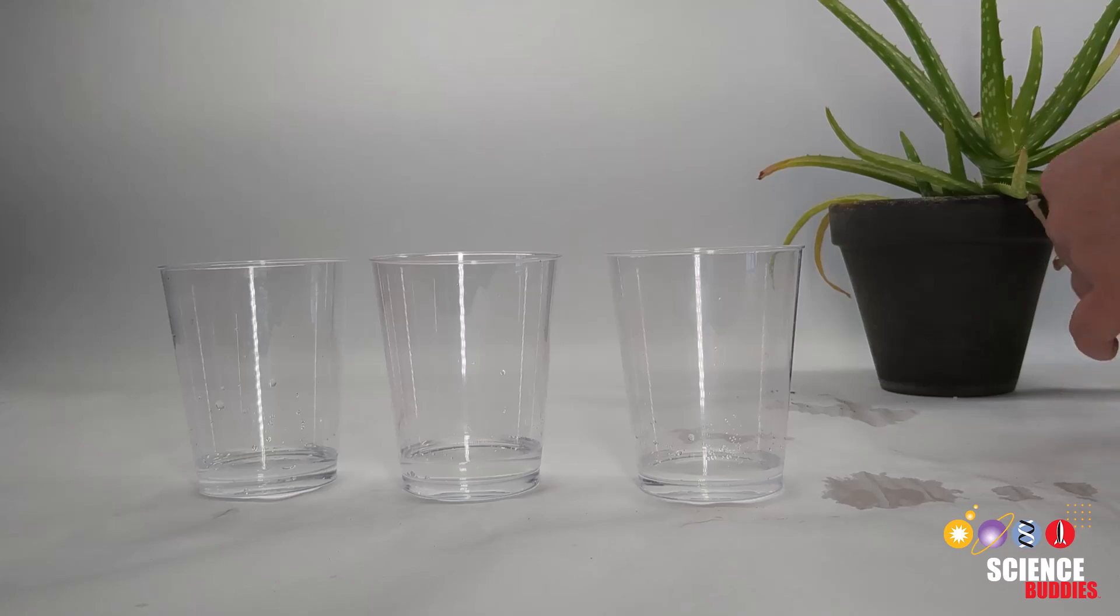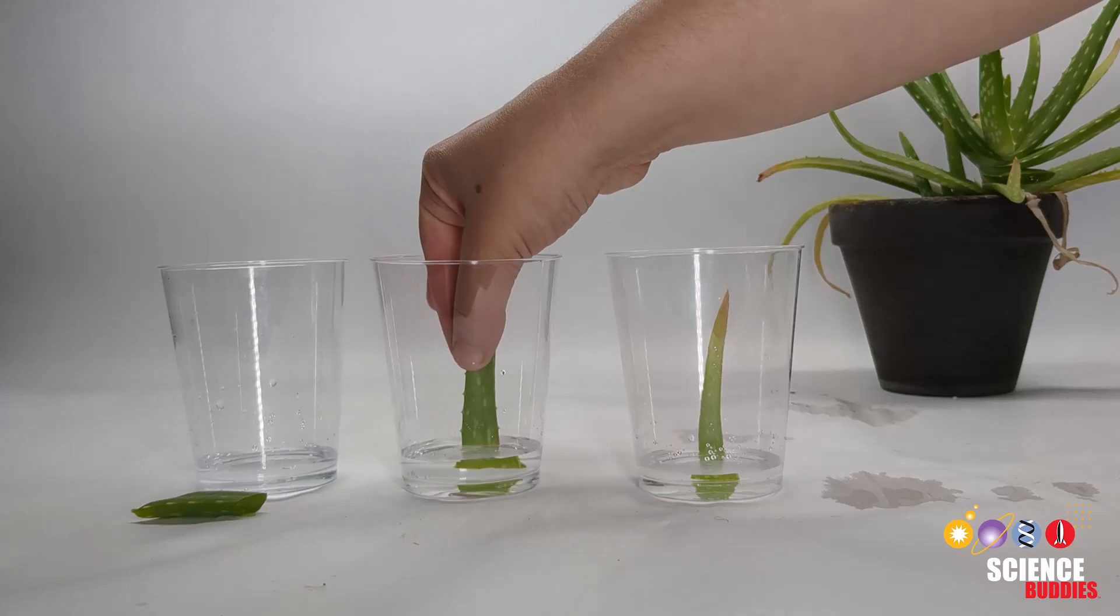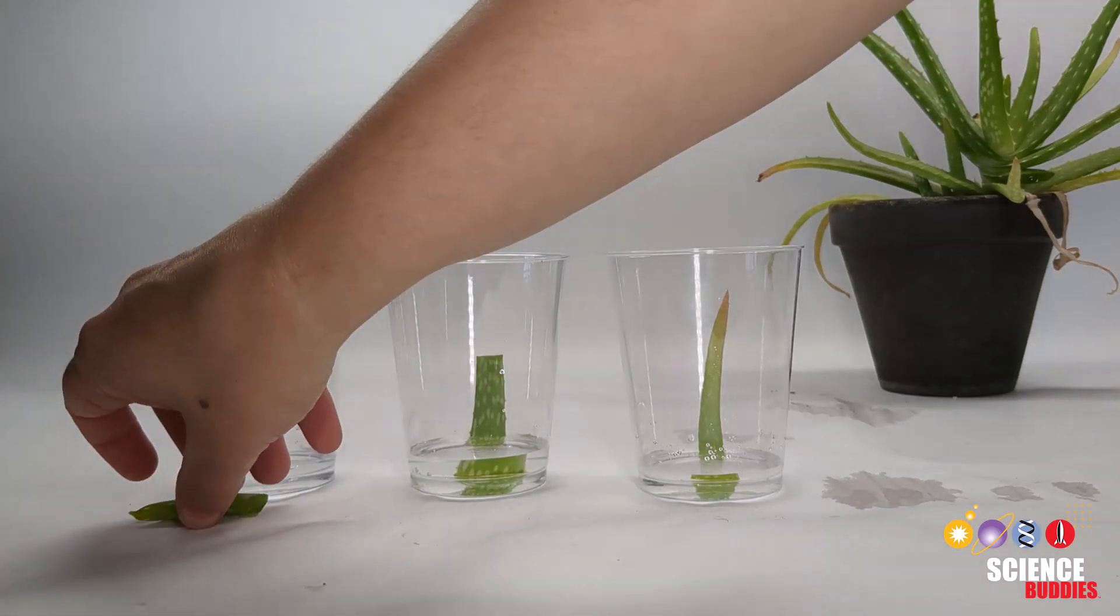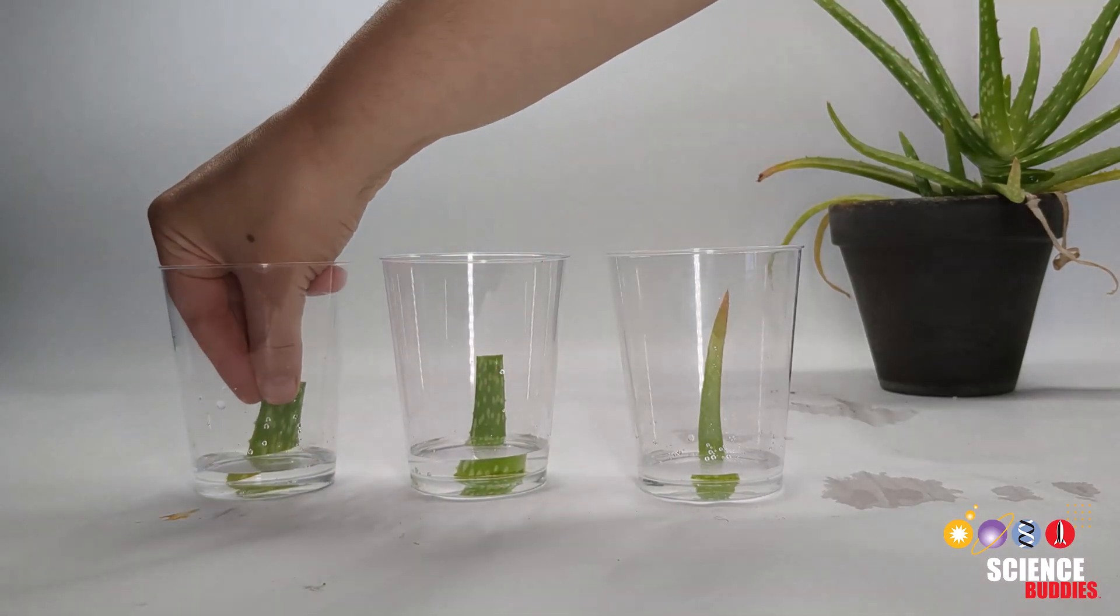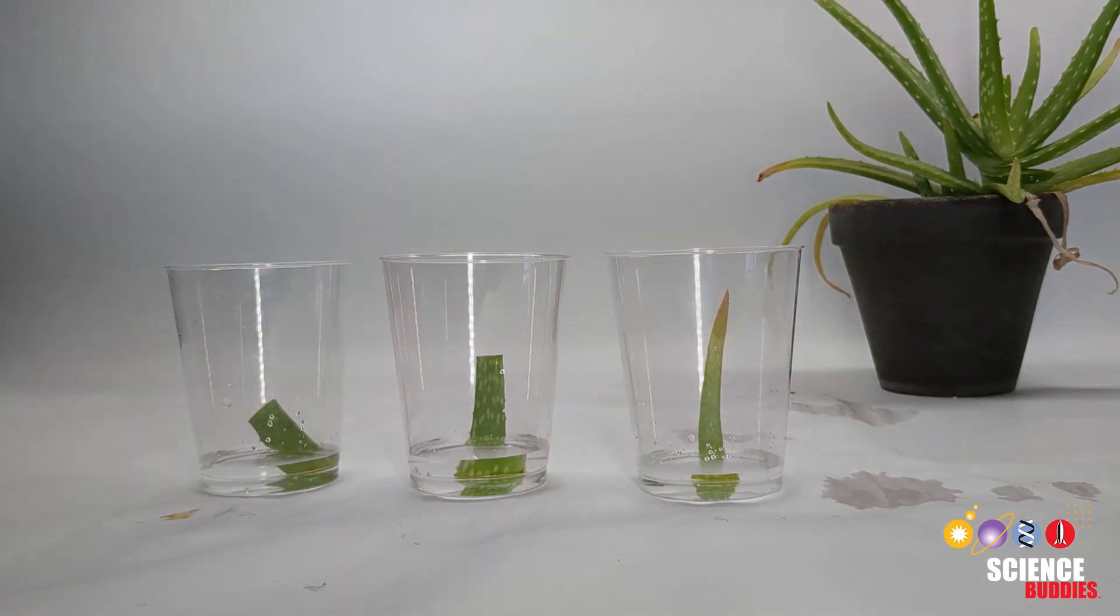As an alternative to our previous experiment, we could measure the regenerative capacity of a single leaf of a common household plant, such as the aloe plant. We can do this by cutting the leaf into a top, middle, and bottom portion and see if it regrows roots or regrows from the shoot.